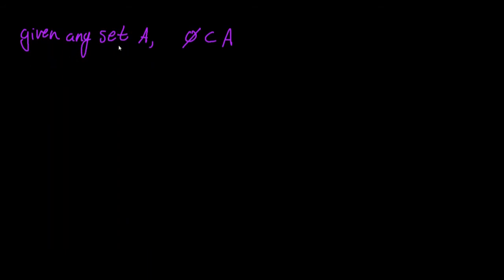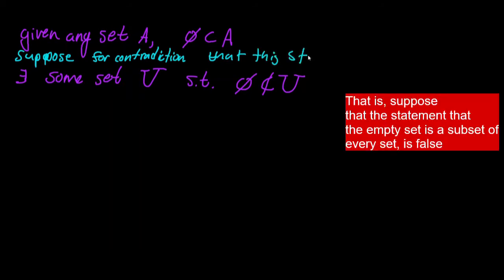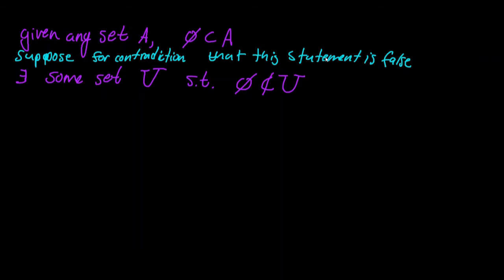Similarly, given any set A, the empty set is a subset of that set A. So if this statement were false, that means there exists some set, we'll call it U, such that the empty set is not a subset of U. So, suppose for contradiction that this statement is false.